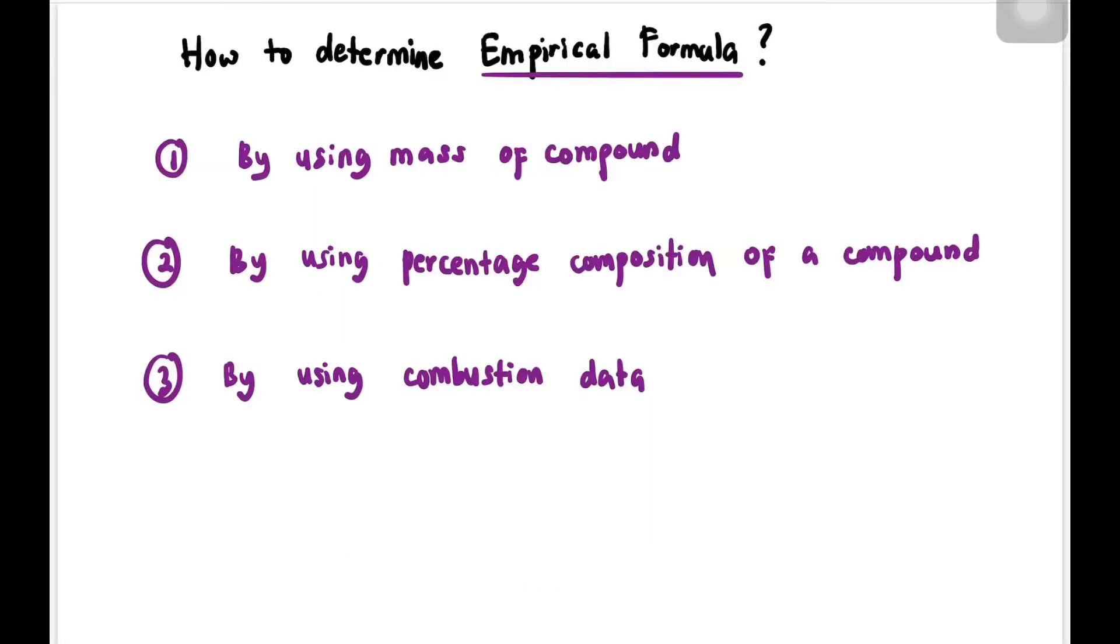Let's learn how to determine empirical formula. There are three ways: the first is by using mass of compound, the second is by using percentage composition of a compound, and the third is by using combustion data.